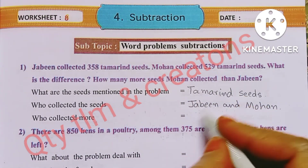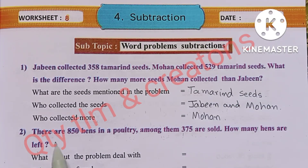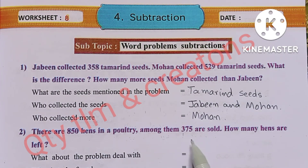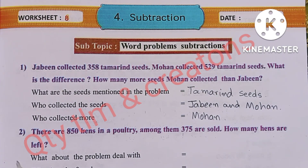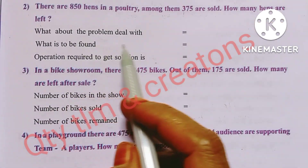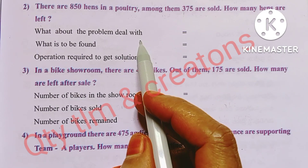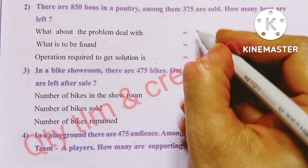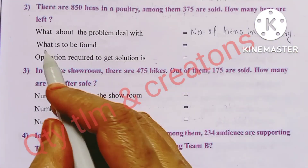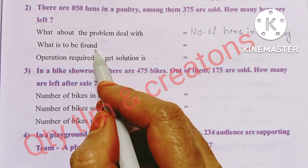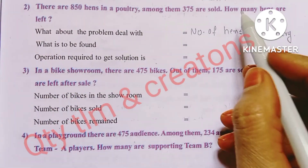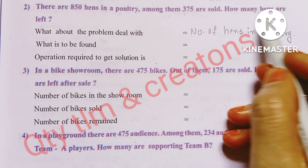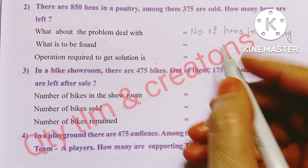Next question: There are 850 hens in a poultry; among them 375 are sold. How many hens are left? The problem deals with the number of hens in a poultry. We have to find the number of hens left in the poultry.